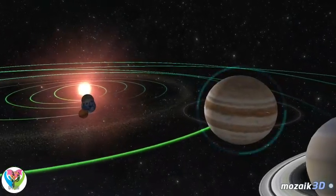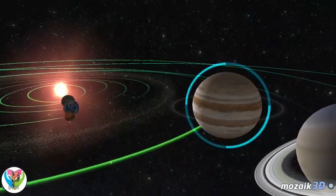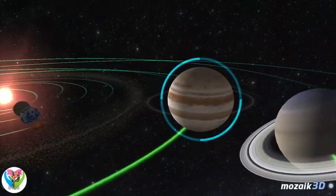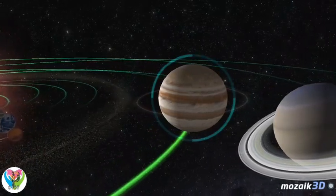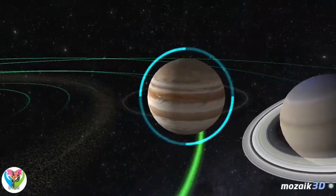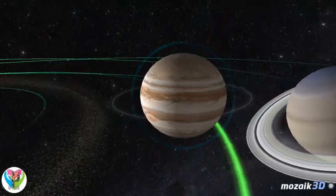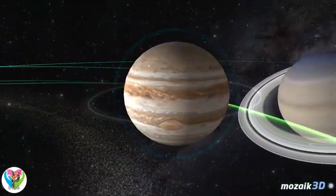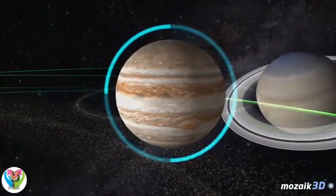Jupiter is the fifth planet from the Sun, second from the Earth, and the closest of the outer planets. It is the largest planet in the solar system, with a diameter of 142,984 kilometers. It has two and a half times the mass of all the other planets combined.